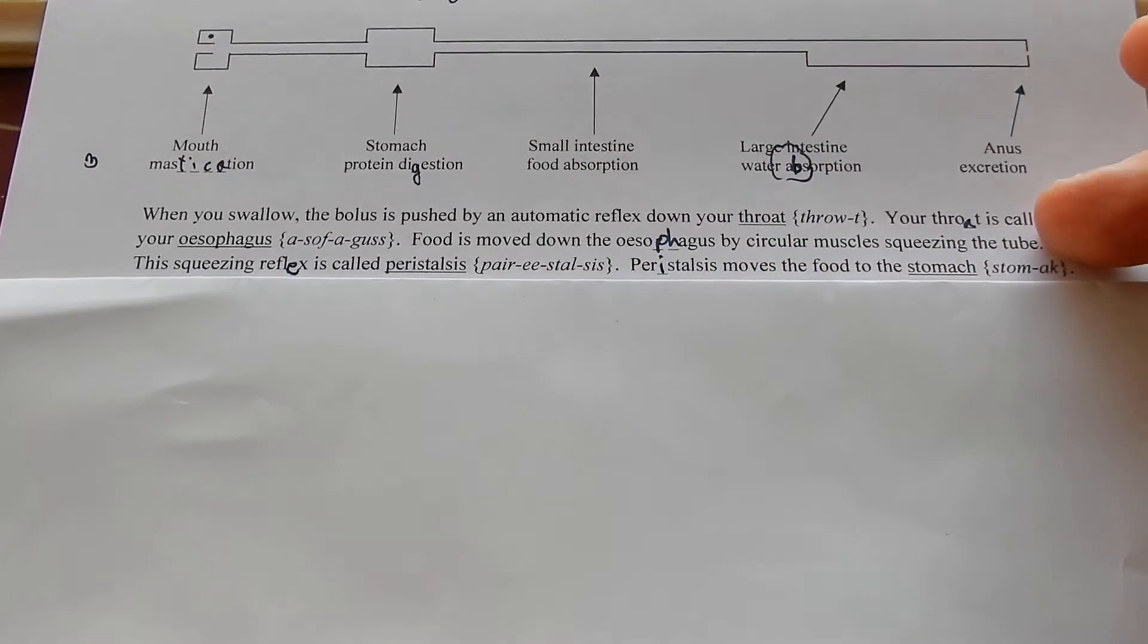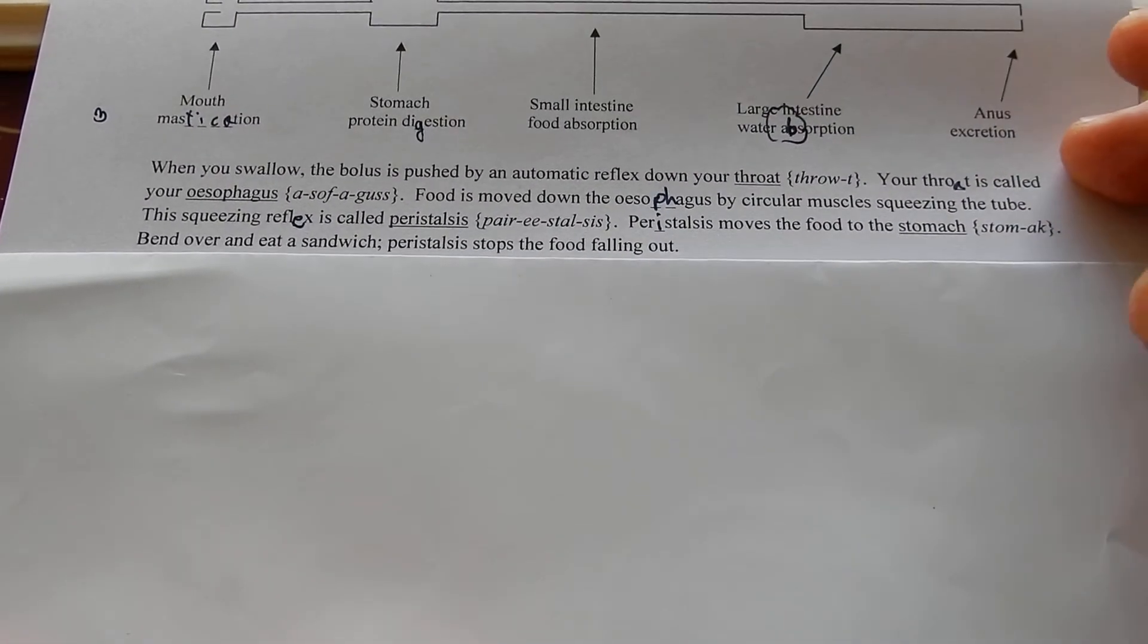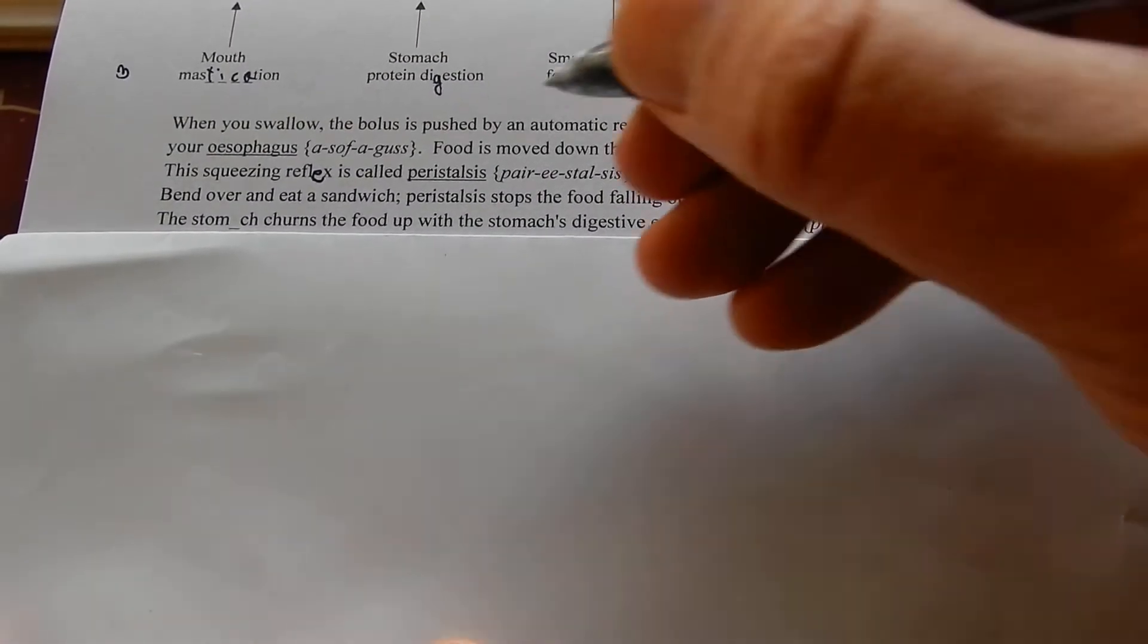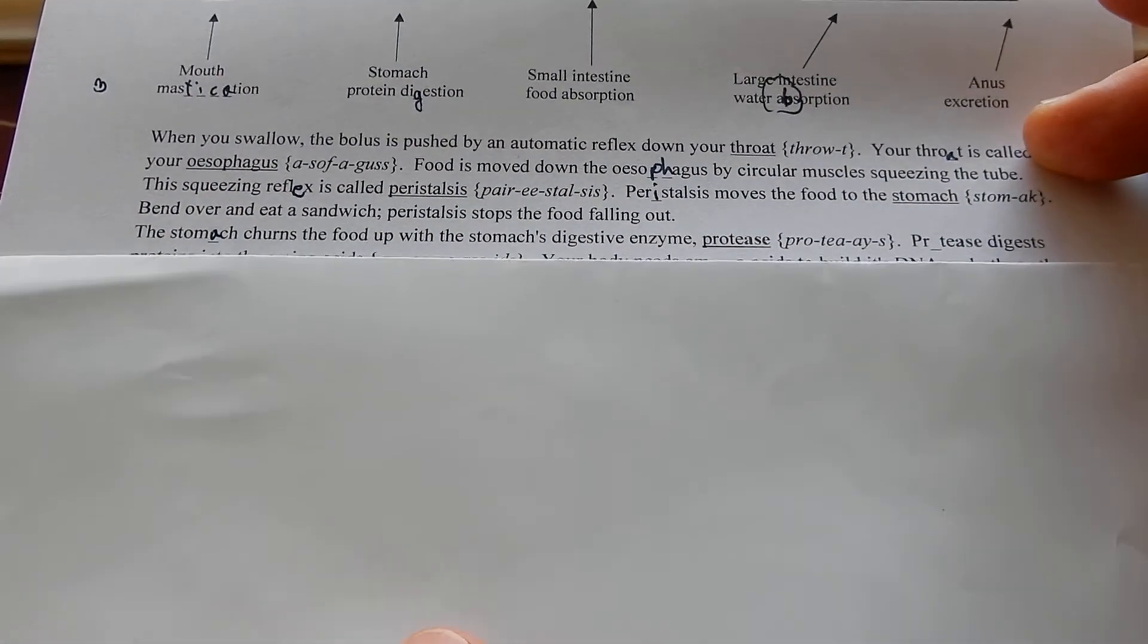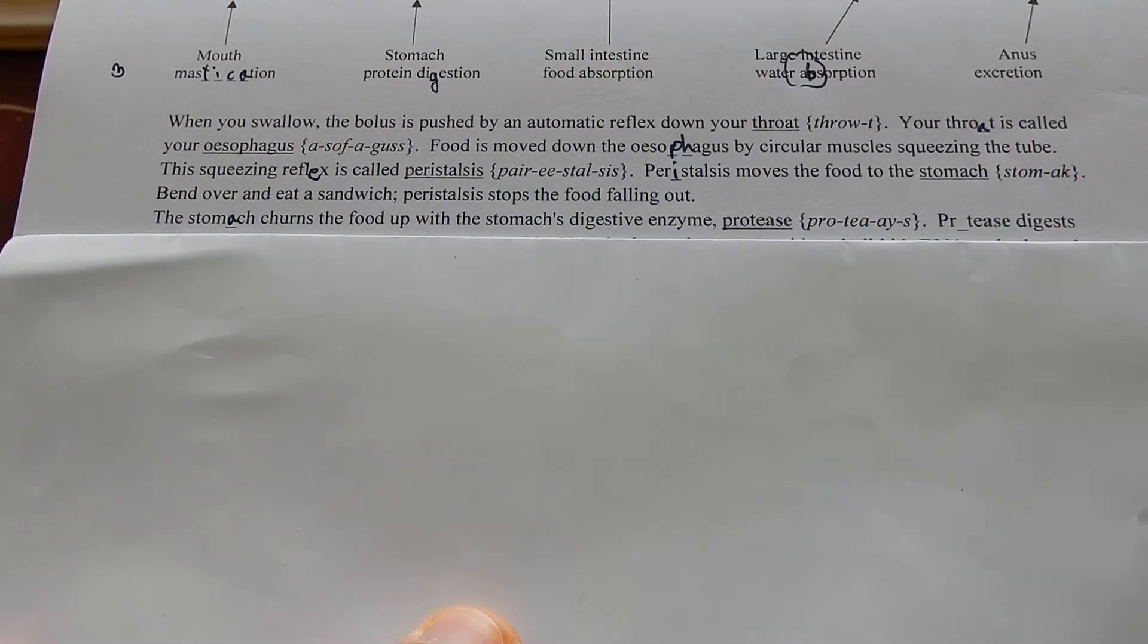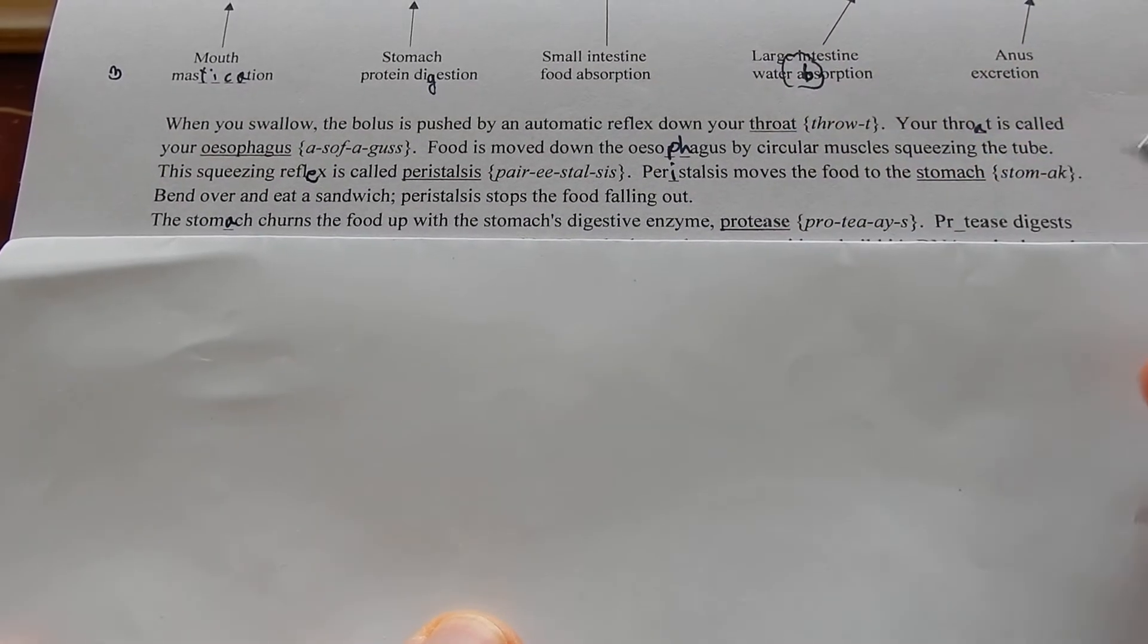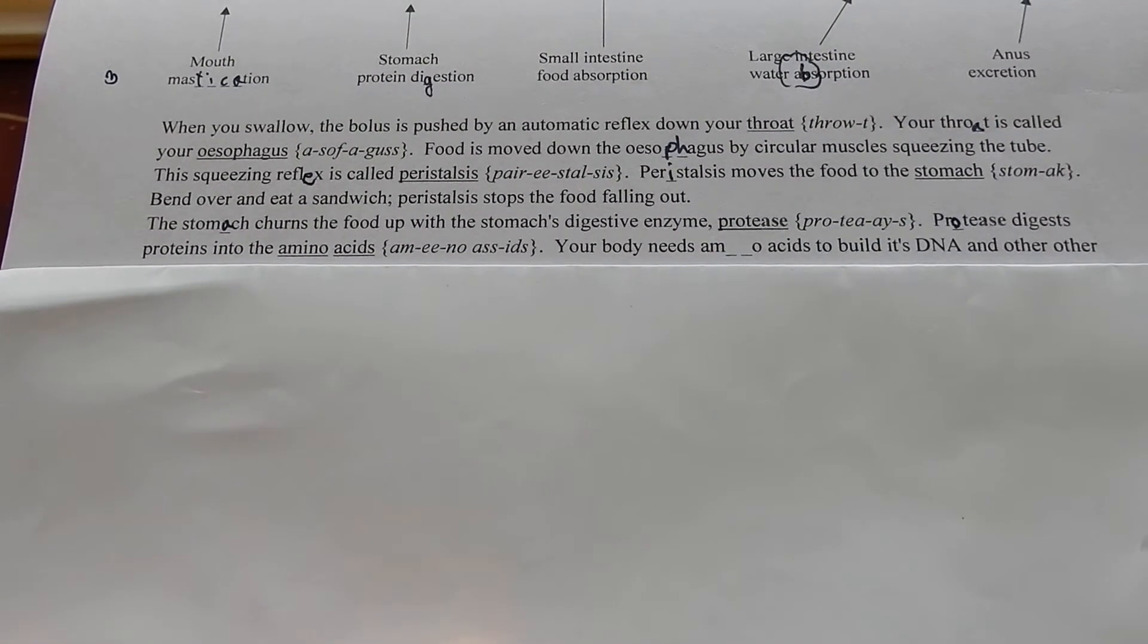Peristalsis moves the food to the stomach. Bend over and eat a sandwich. Peristalsis stops the food falling out. The stomach churns food up with the stomach's digestive enzyme protease. It's an enzyme.